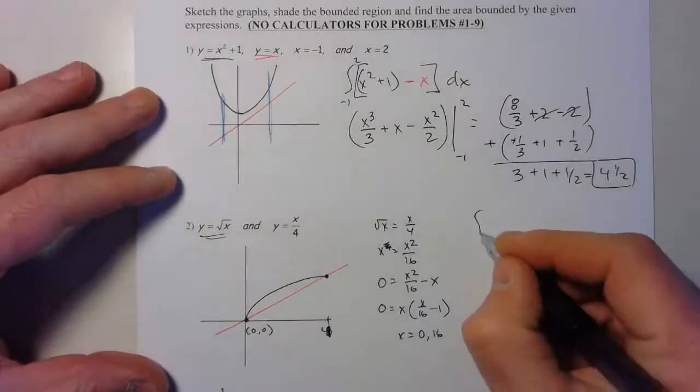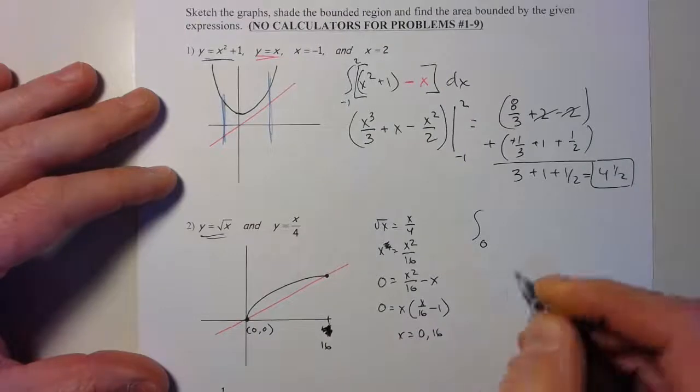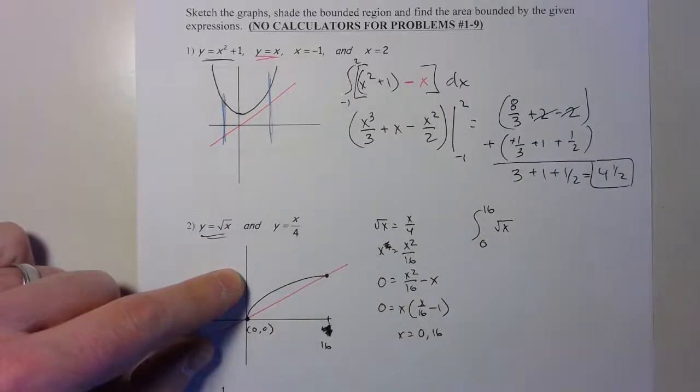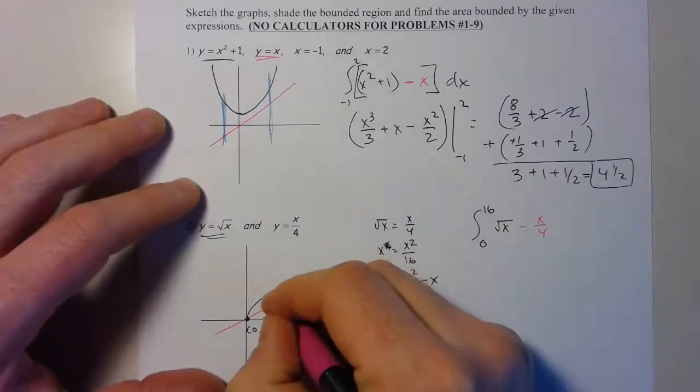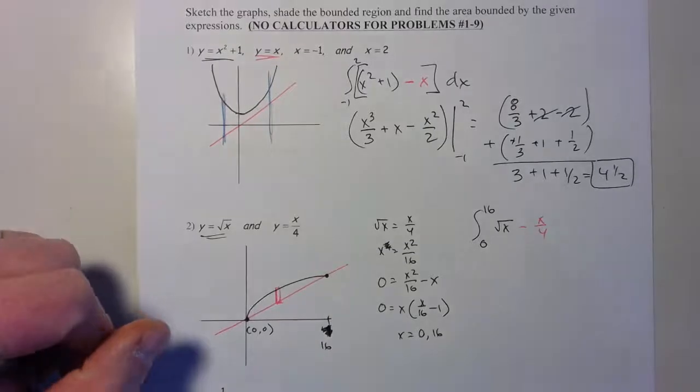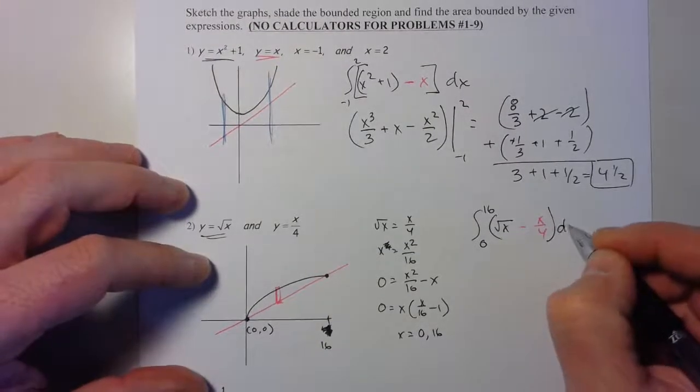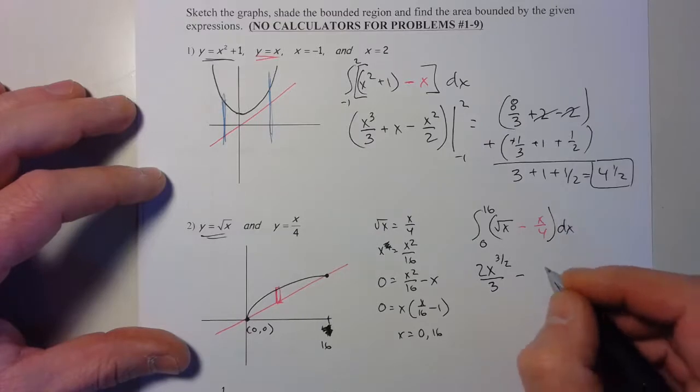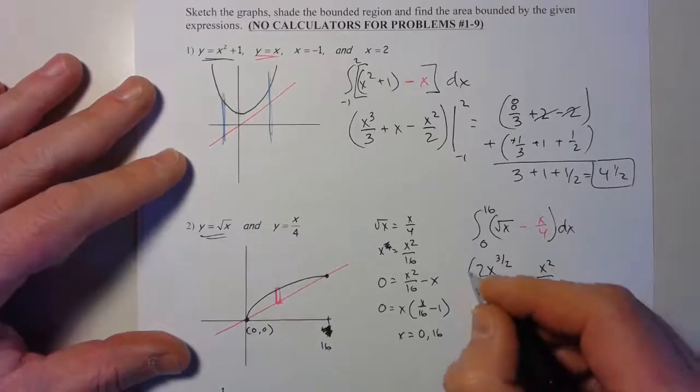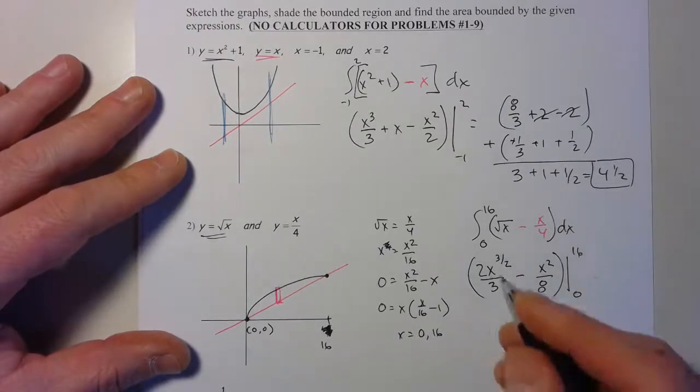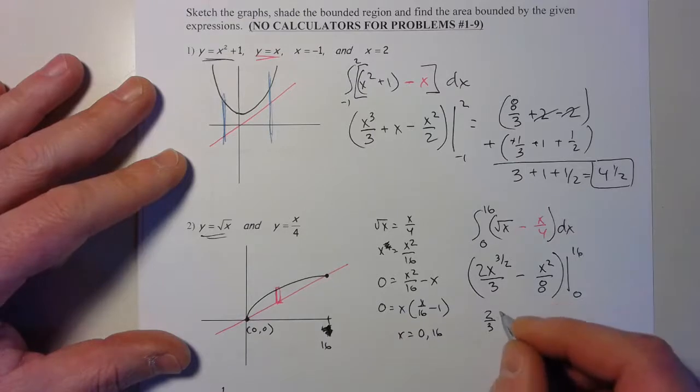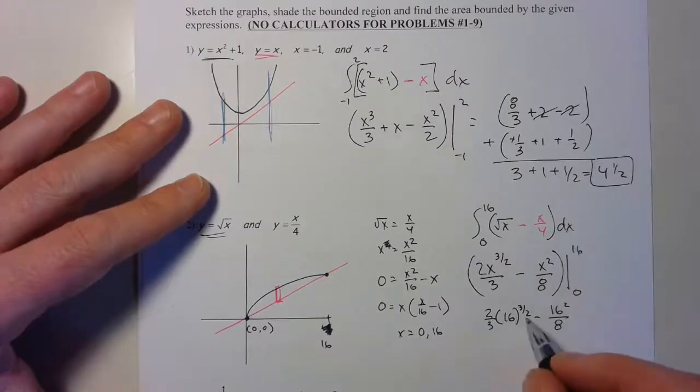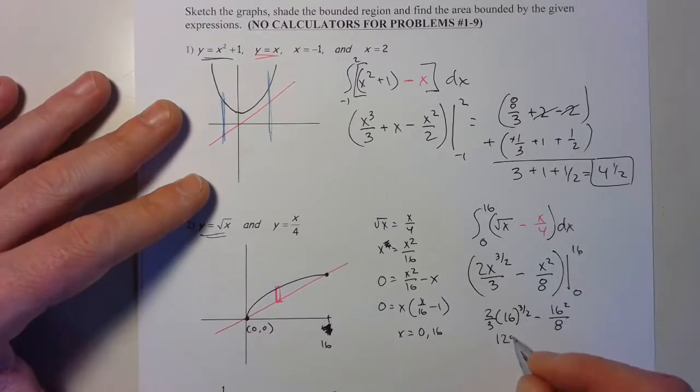My integral then is going to be 0 to 16. The upper one is the black function, the lower one is the pink. I'm going this way because it just seems to make the most sense. Really if I had a choice, I'm gonna try to integrate in terms of dx. So it's the integral from 0 to 16 of √x - x/4, dx. That gives me 2/3 x^(3/2) minus x²/8.